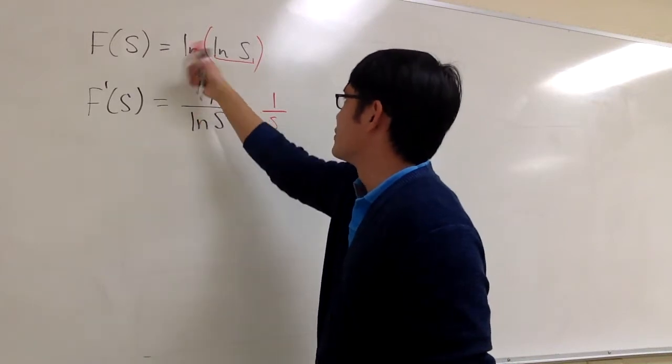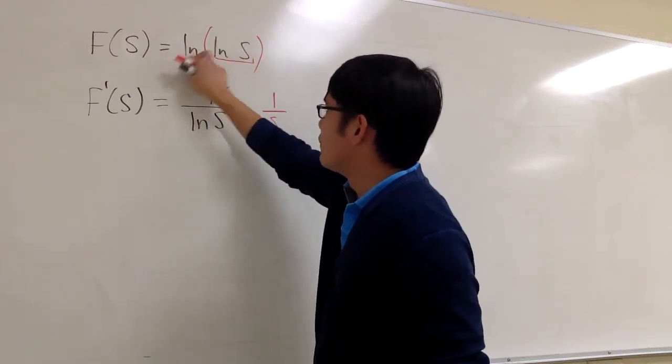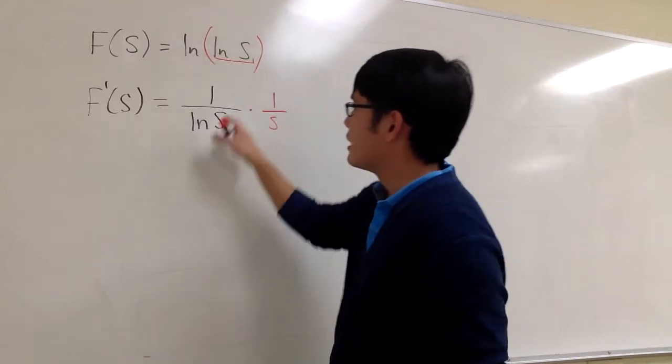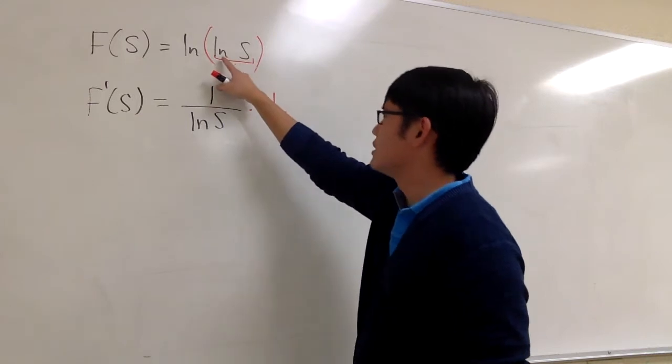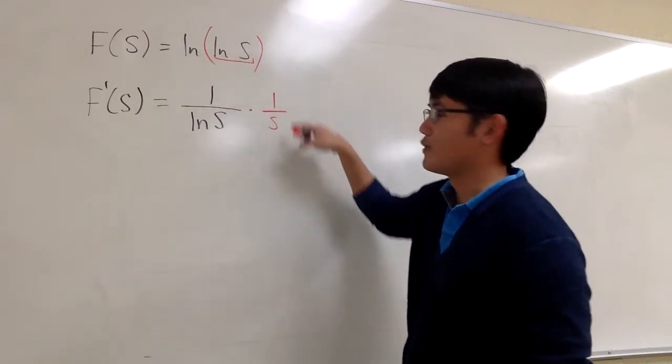And to just recap real quick, ln of something, you bring down the inside to the denominator, and you multiply by the derivative of the inside, which is the derivative of ln s, which is 1 over s.